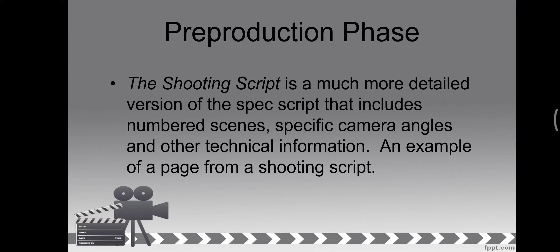The shooting script is a much more detailed version of the spec script. It includes numbered scenes, specific camera angles, and other technical information. The shooting script is very detailed — all movements of actors and actresses, all camera angles, all facings, and every movement should be well documented, very clear, and very detailed.